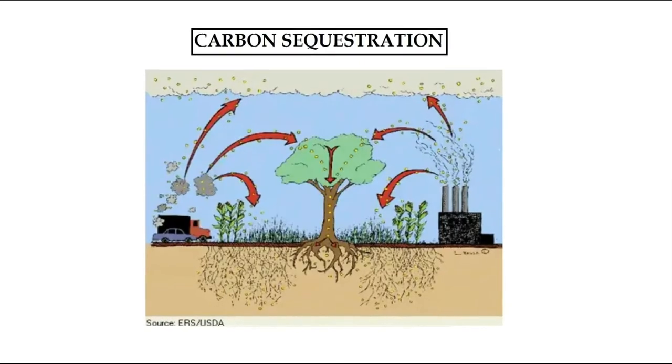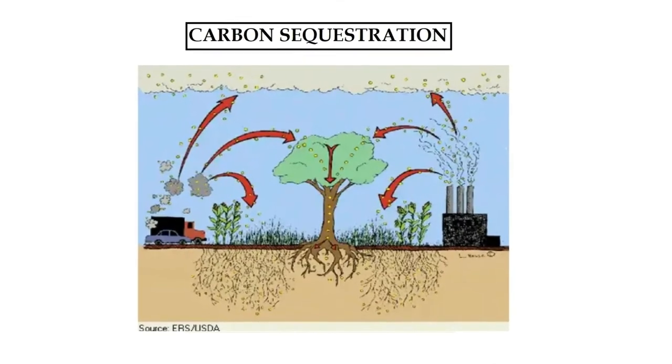From an economic perspective, Earth Overshoot Day represents the day on which humanity enters ecological deficit spending. From the perspective of ecology, the term illustrates the level by which the human population overshoots the environment. It is estimated that in less than 7 months, we demand more renewable resources and carbon dioxide sequestration than what the planet can create for an entire year.